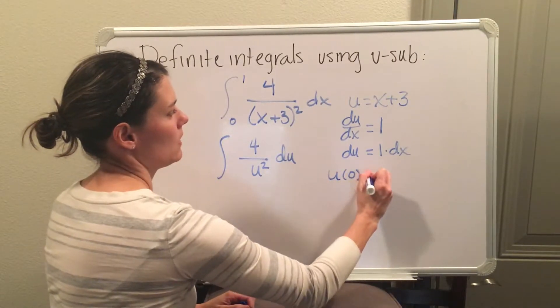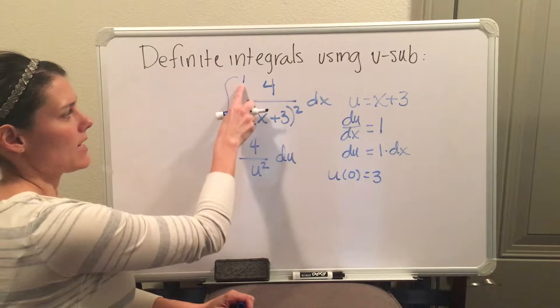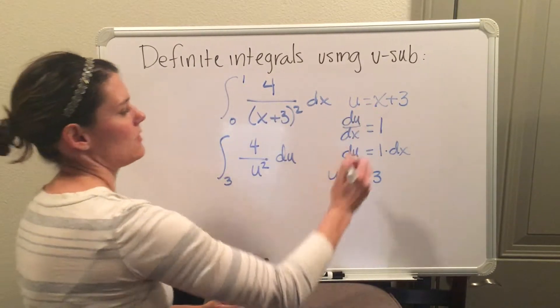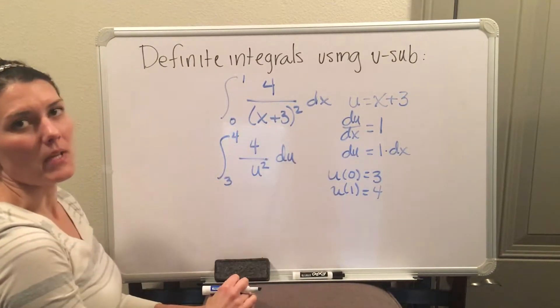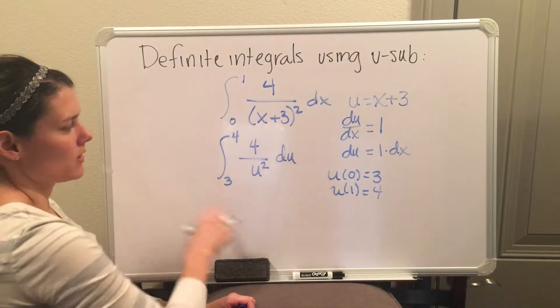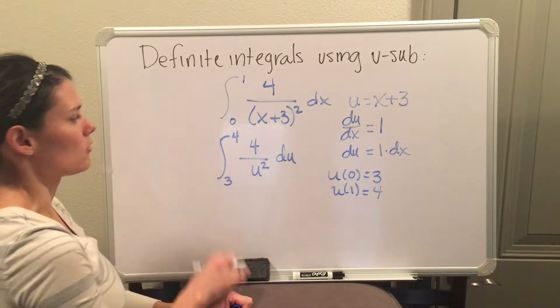So if I plug 0 into u, I get 3, and that is your new a. And then take your b and go plug it into u, and you get 4, and that is your new b. And this is now the complete u-substitution, including the definite interval part.